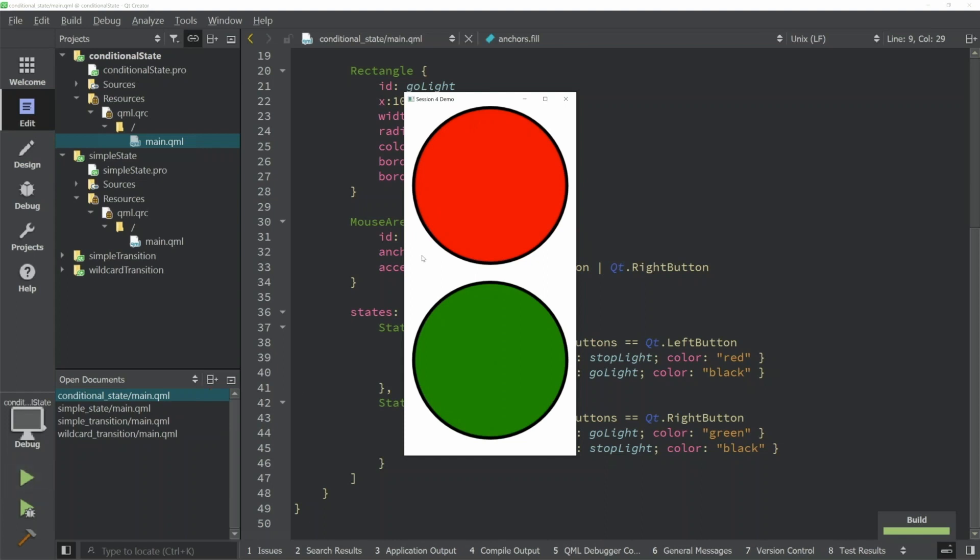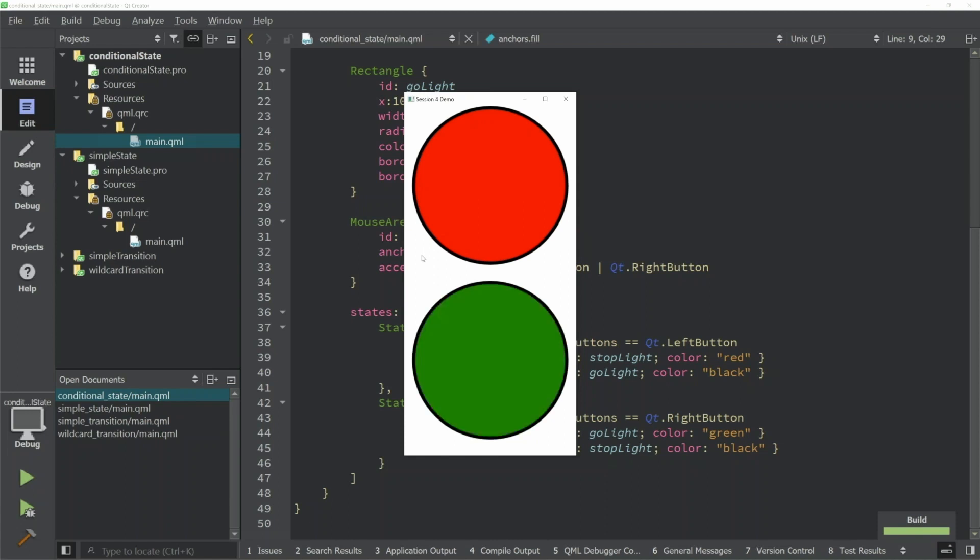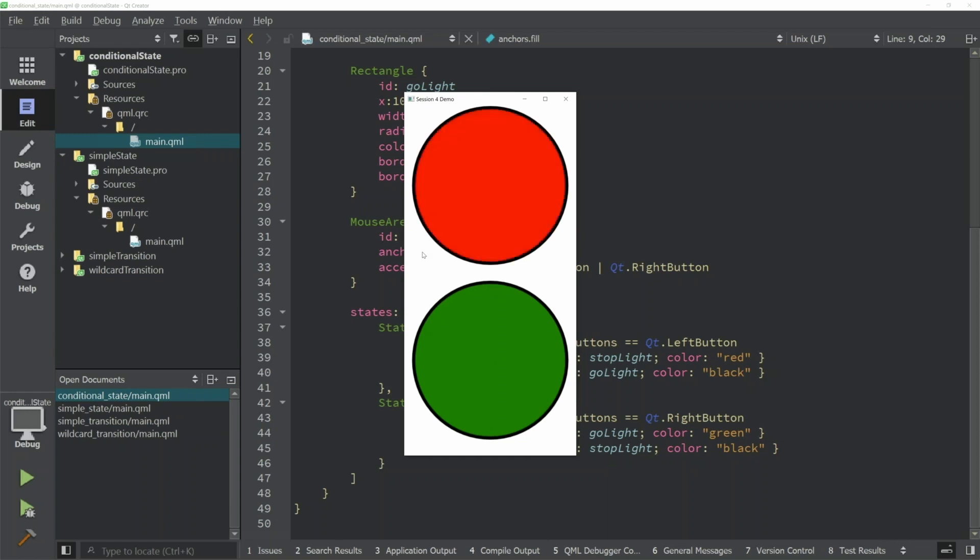If I run this application, we'll see that by default, we're in that state that we didn't name before where each one of them is lit with their color. When I press down the left button, we enter what used to be the stop state. When I release that and I push the right mouse button, we're now in the go state. If I hold this down and push the left button as well, you can see that we've entered back to the default settings for our properties.